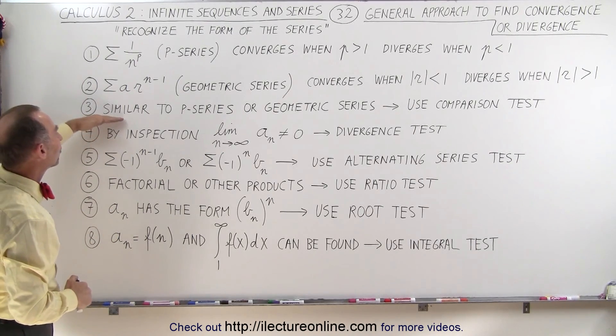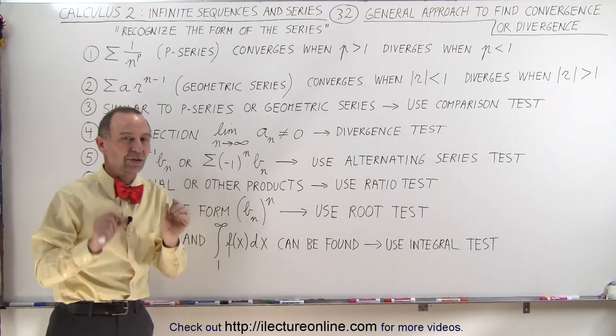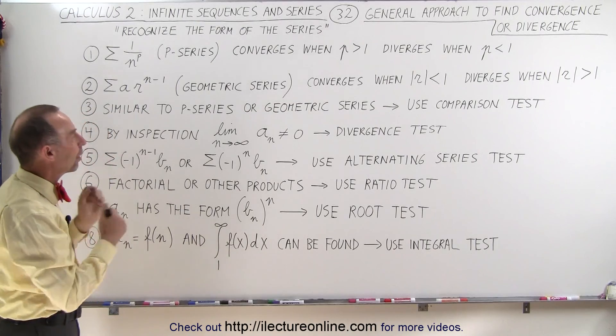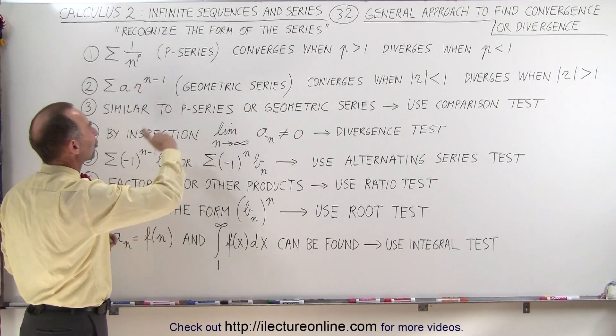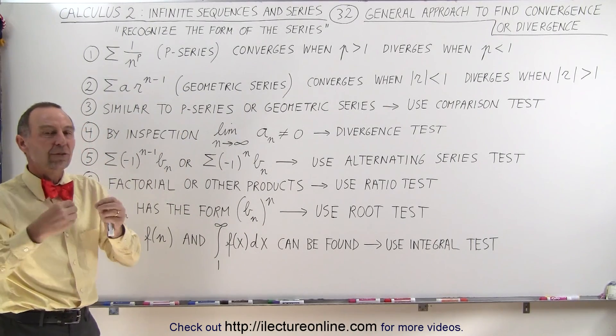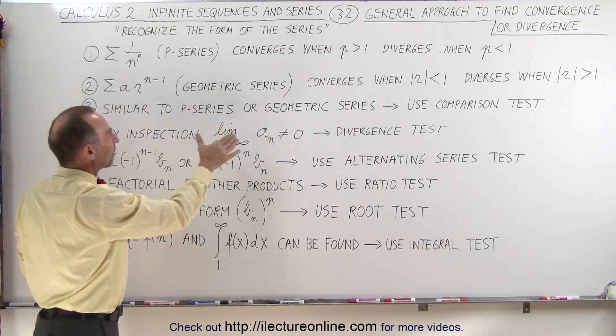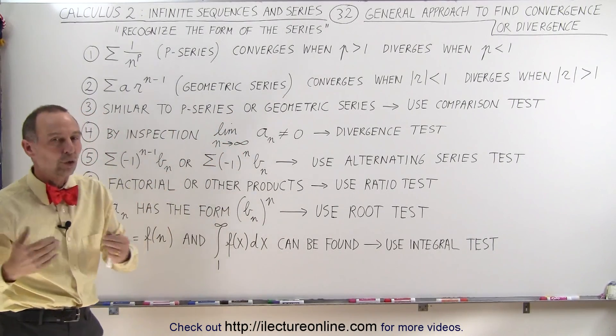We have other series which are similar to the p-series or the geometric series. They're just slightly different, and so what we do then is if we realize that it's smaller than the p-series or smaller than geometric series and the geometric or p-series that looks very similar to that converges, then if this is small then we can say this then must also converge.